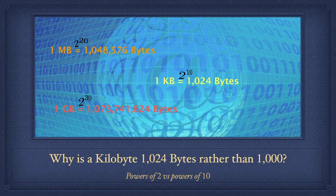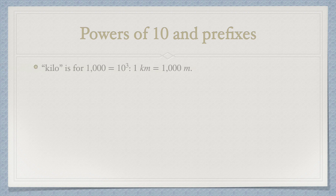Did you ever wonder why a kilobyte is 1024 bytes rather than 1000 bytes? It is a question of powers of 2 versus powers of 10. The prefixes in the decimal metric system are related to powers of 10. Kilo is for a multiplication by 1000, that is 10 to the power 3.